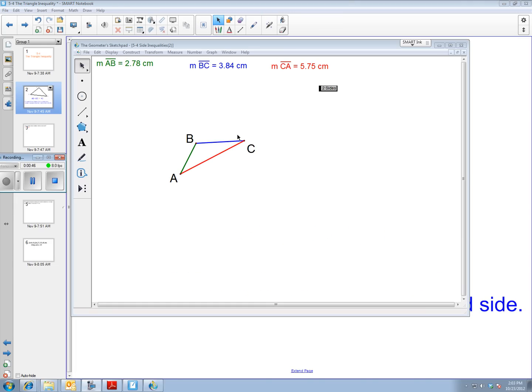If we look at a demonstration of this, I have this triangle on the screen, ABC. The side lengths are there. I'm going to choose BC and CA. BC is the blue one, CA is the red one.